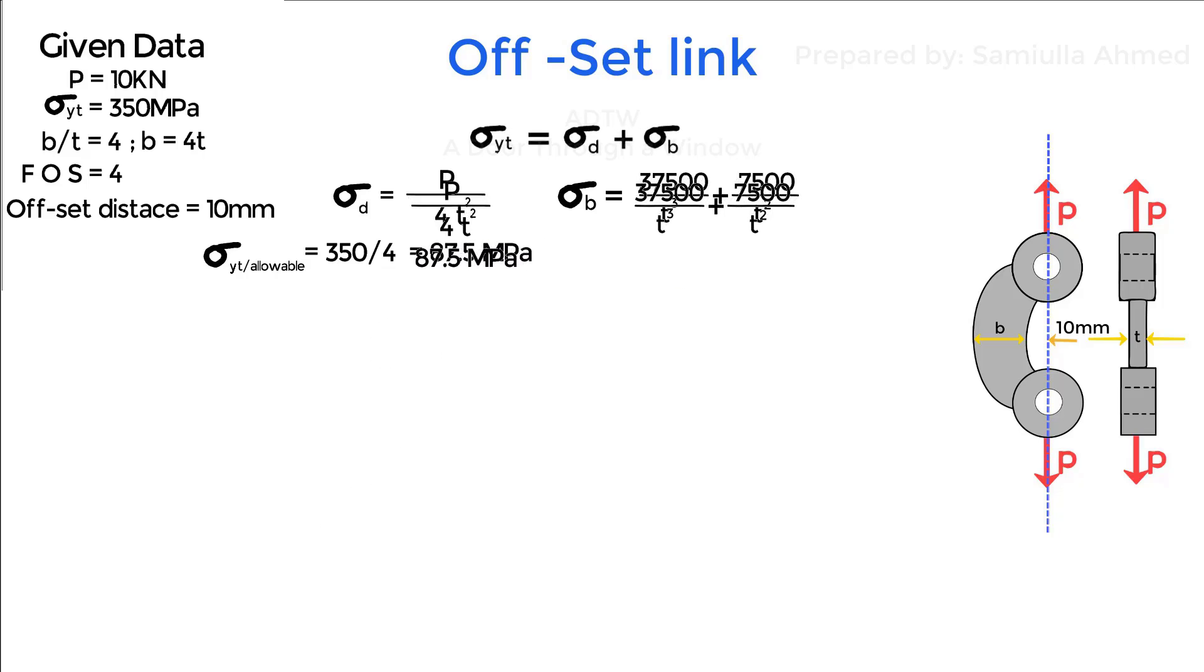Since we know total allowable stress should be equal to direct stress plus bending stress, we'll substitute all those values of stresses to get the thickness of the offset link.